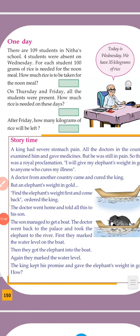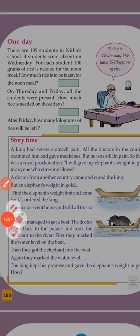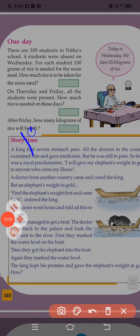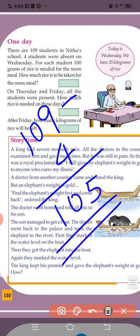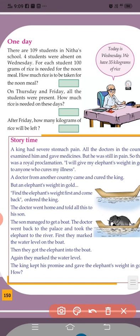Next page. There are 109 students in the school; 4 students were absent on the day. For each student, 100 grams of rice is needed for the noon meal. How much rice is to be taken? 109 minus 4 — so 105 students are present. 105 students into 100 grams.